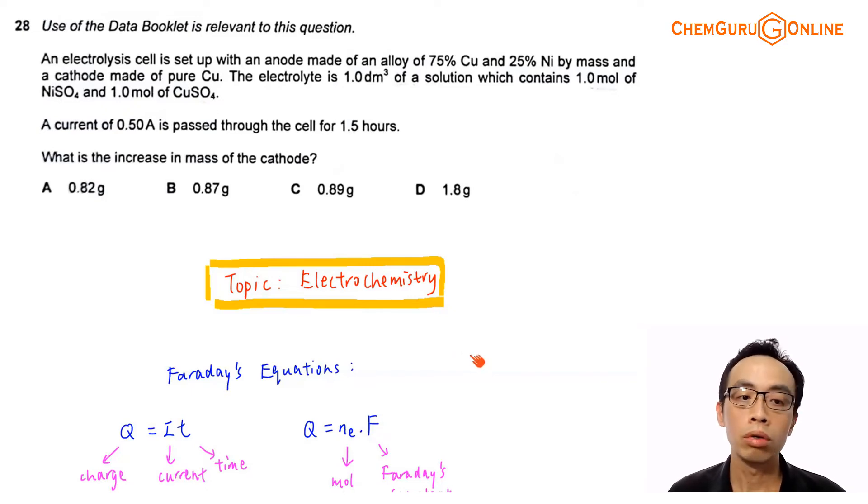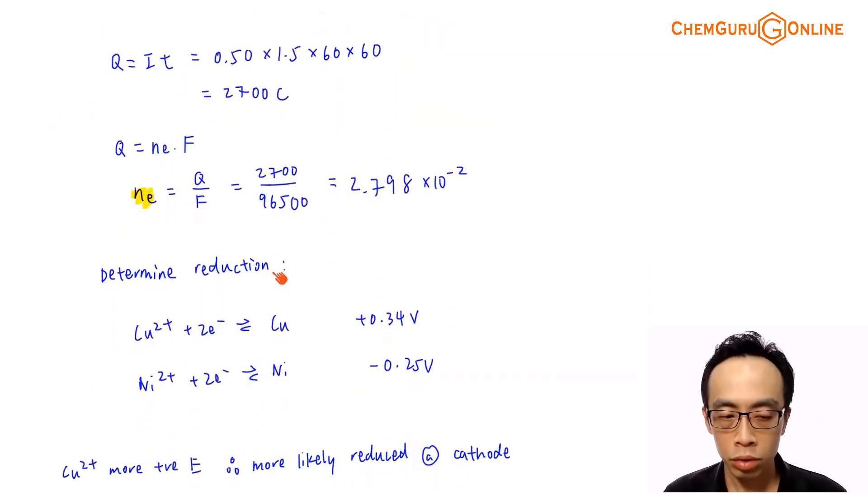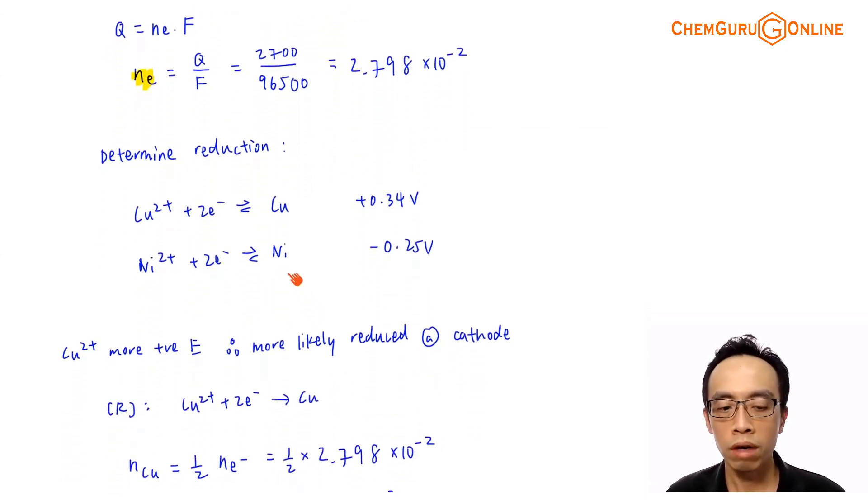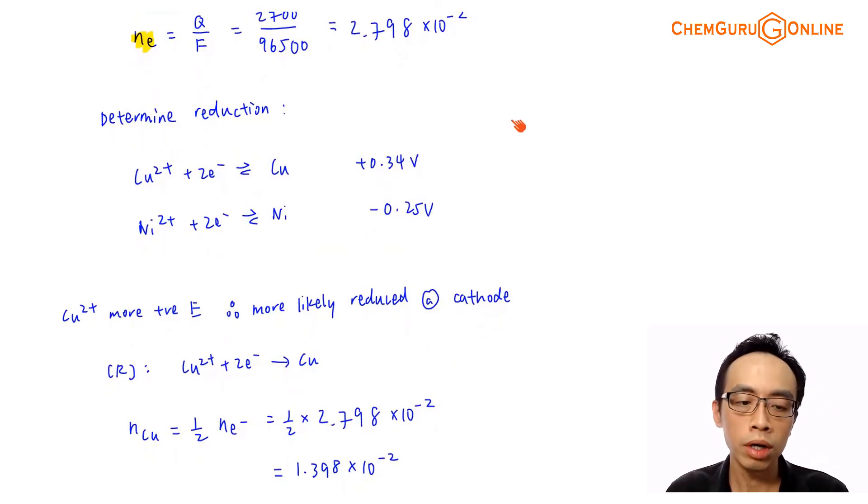Then we decide which species will undergo reduction at the cathode. Let us determine reduction. There are two species: copper 2+ and nickel 2+. The E° values involving the reduction of copper 2+ to copper and nickel 2+ to nickel can be found in the data booklet. The reduction potential for copper 2+ to copper is +0.34 volt, and for nickel 2+ to nickel is -0.25 volt. Comparing reduction, the one with the more positive E° value will be more likely reduced. Copper 2+ versus nickel 2+, +0.34 versus -0.25, obviously +0.34 is more positive. This means copper 2+ will be more likely reduced and therefore will be reduced at the cathode.